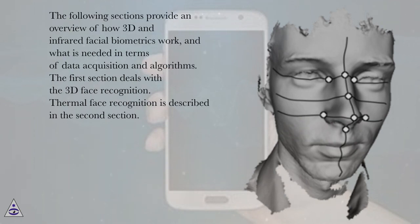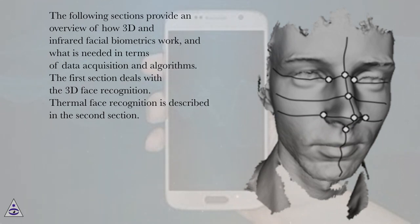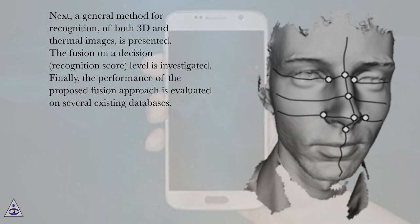The following sections provide an overview of how 3D and infrared facial biometrics work, and what is needed in terms of data acquisition and algorithms. The first section deals with the 3D face recognition. Thermal face recognition is described in the second section. Next, a general method for recognition of both 3D and thermal images is presented. The fusion on a decision, or recognition score, level is investigated.